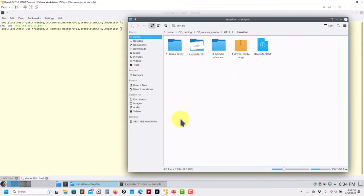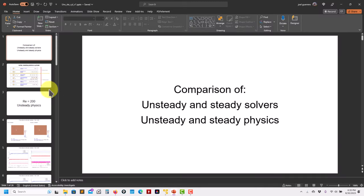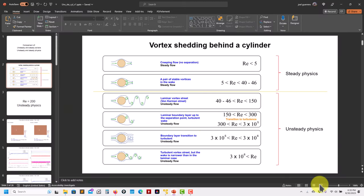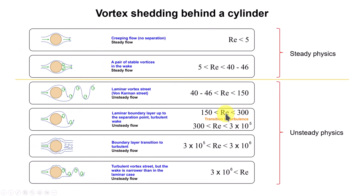You will see that it's quite a good exercise for us. So what we're going to address is the classical cylinder case. You know that depending on the Reynolds number, you can have different behaviors — from steady to unsteady. And I'd like to use this case to address a question everybody asks: when do you know that your solution has converged?